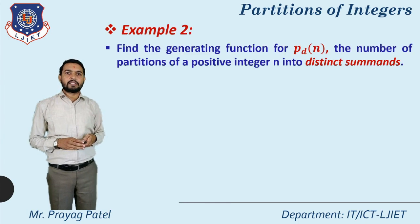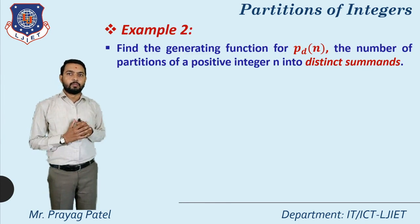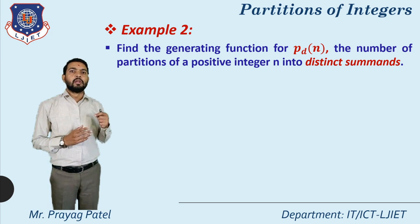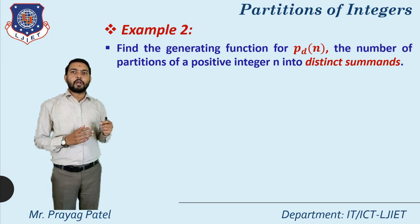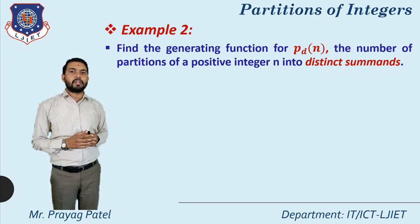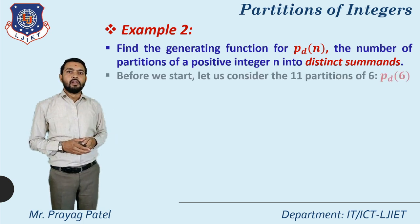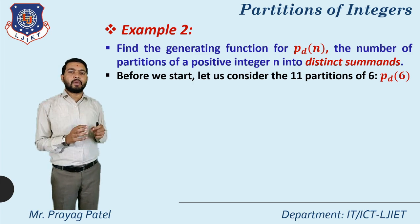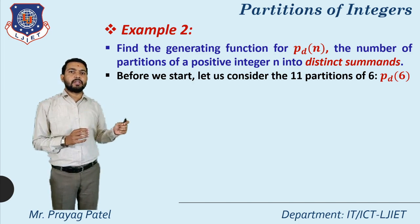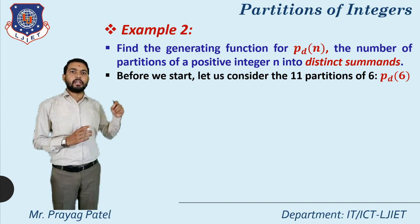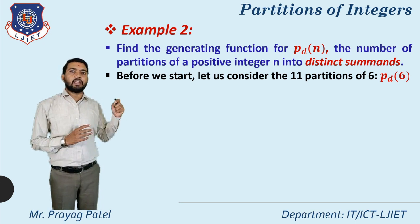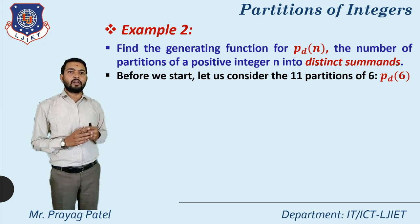Now consider Example 2: find the generating function for p_d(n), the number of partitions of the positive integer n into distinct summands. Here our criterion is that each element in the summation is different — this is called distinct summands. Let us first consider the 11 partitions of 6.